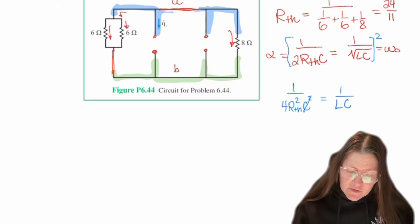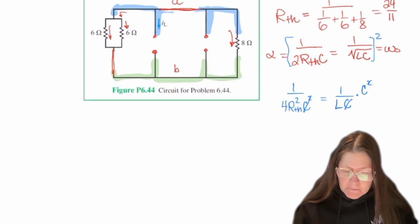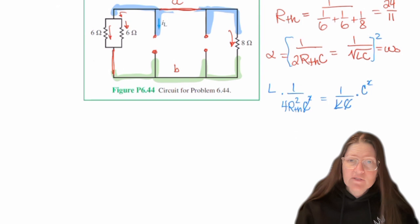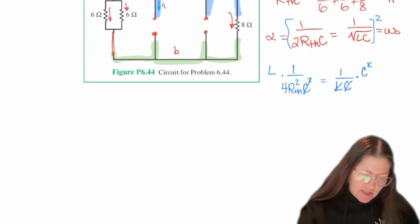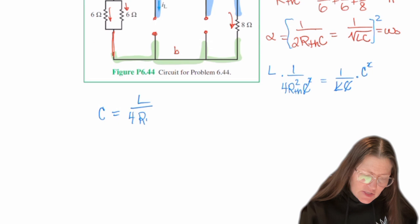So if we bring the C squared over to the other side, so multiply this by C squared, that will reduce this down to C. And then we can multiply this side by L. And so we have now an equation with just the one unknown C because we know L and RTH. So C will be equal to L over 4RTH squared.